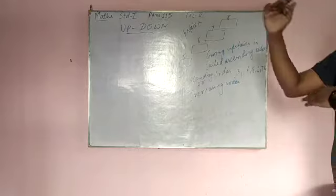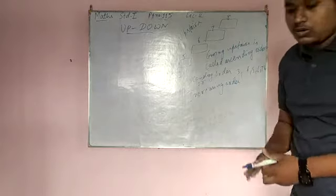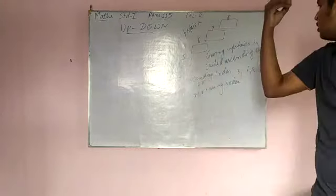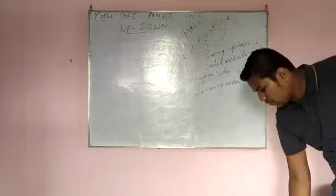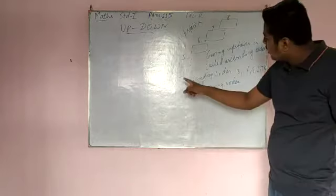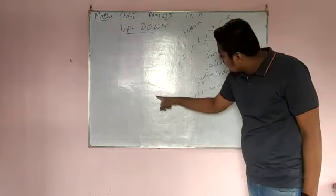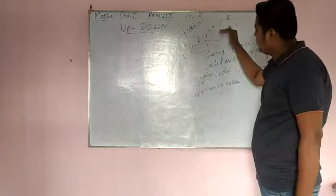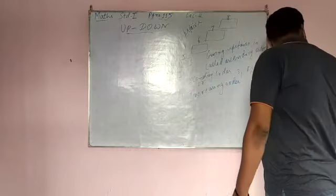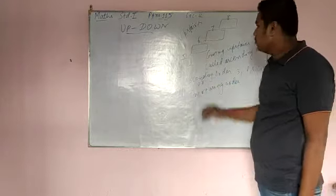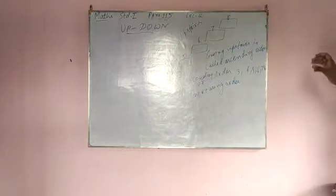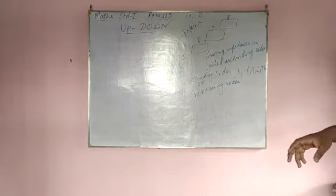Ascending means you are going from down to up. See, you are going down to up: 3, 4, 5, 6, 7, 8. You are going down to up, so this is known as ascending order — that we also say increasing order.